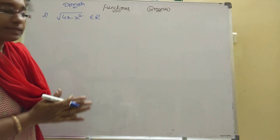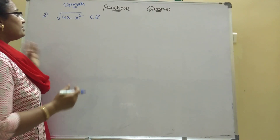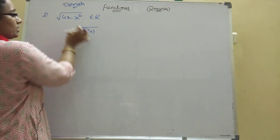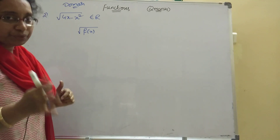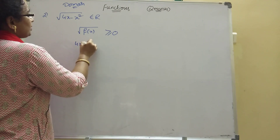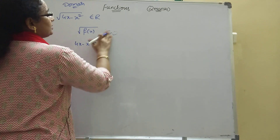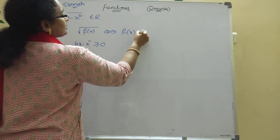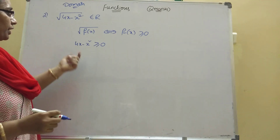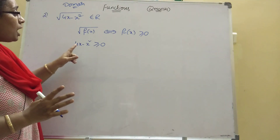Second sum: find the domain of √(4x - x²). Since a square root is given, the condition is f(x) ≥ 0. So 4x - x² ≥ 0. Here the x² term has a negative sign, so we take minus common from both terms.